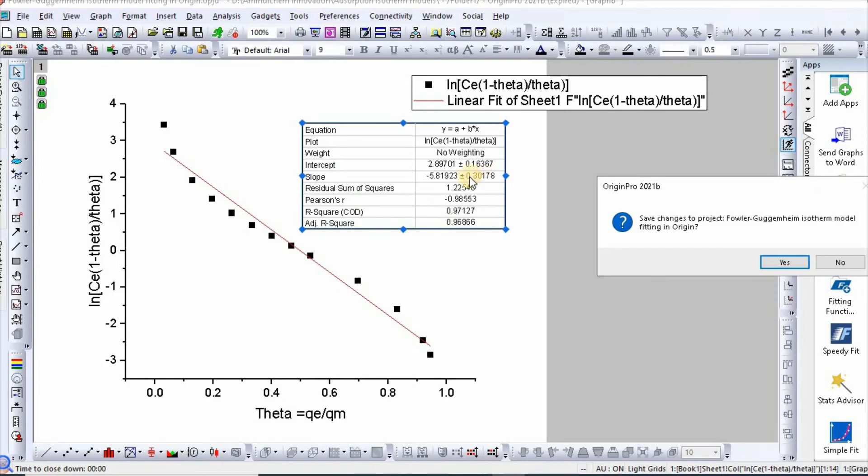So this is how we can easily calculate Fowler-Guggenheim model parameters using OriginPro. Thanks for watching.